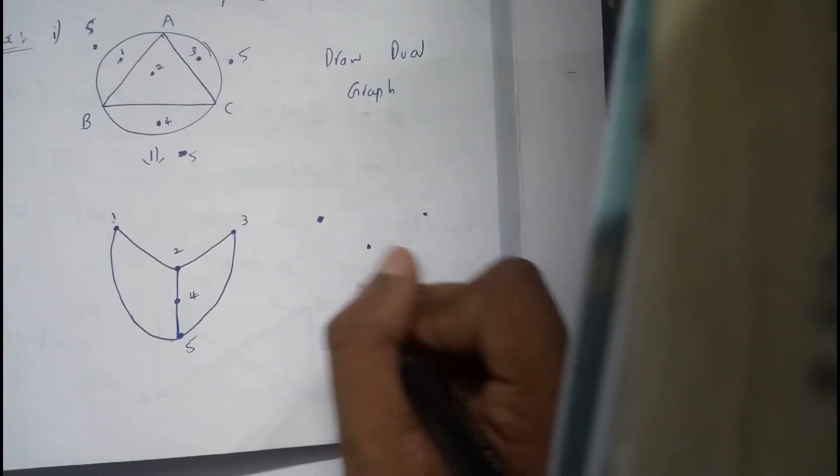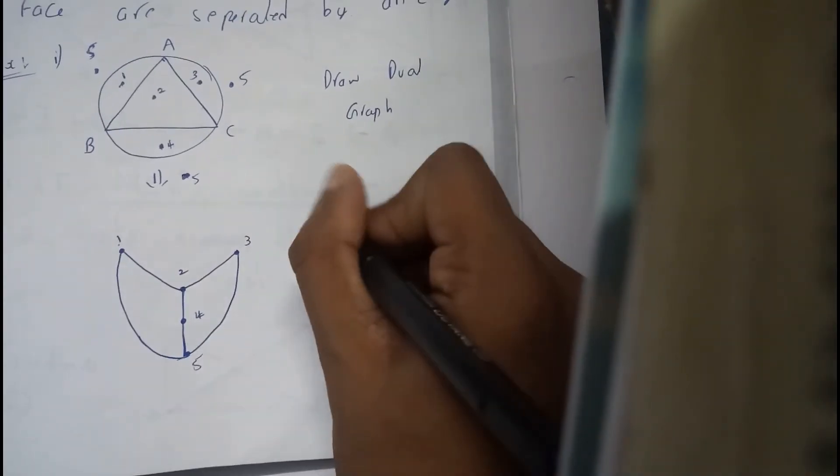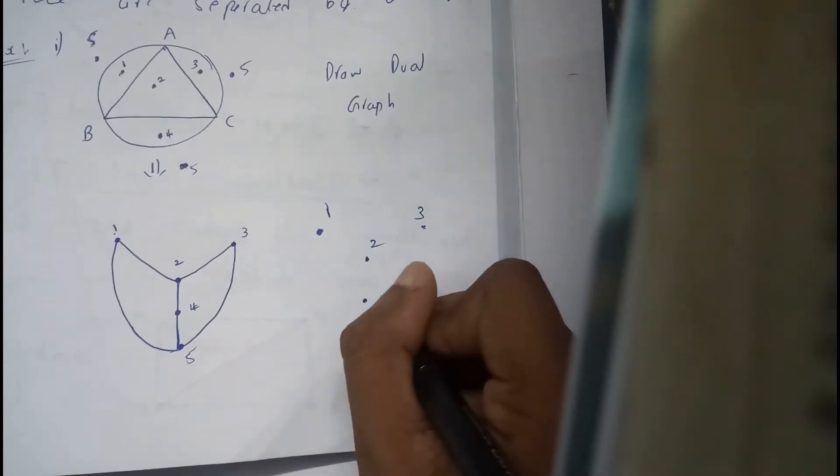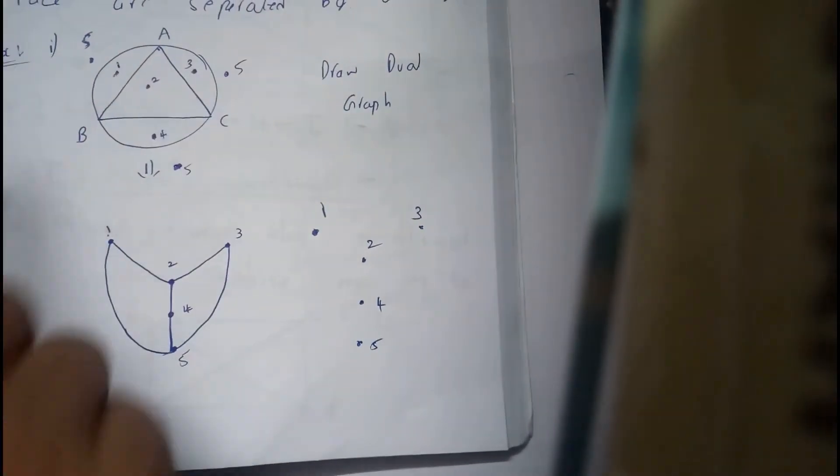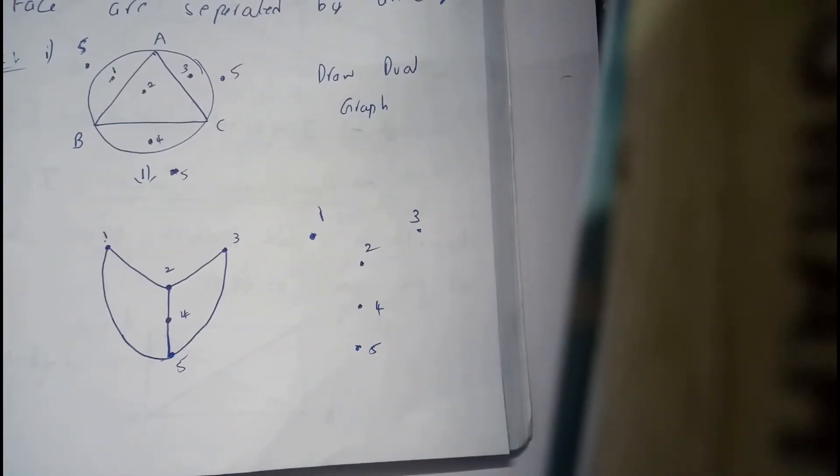But you will not be repeating the fifth again, you'll be just drawing it once. One, two, three, four, five. So here for some clarity I have just kept five again and again right there.